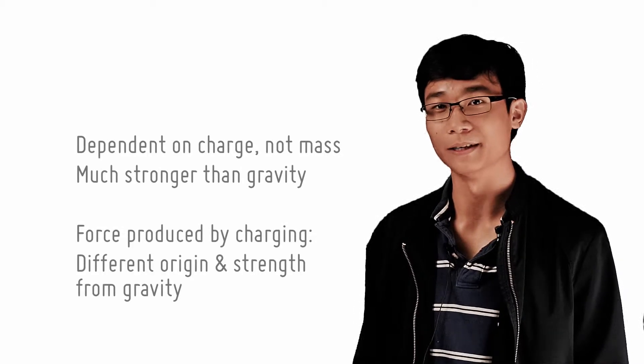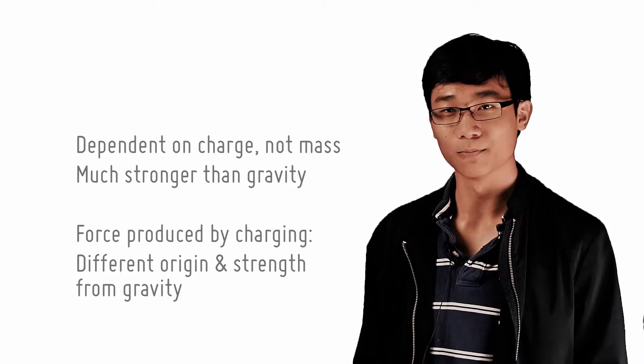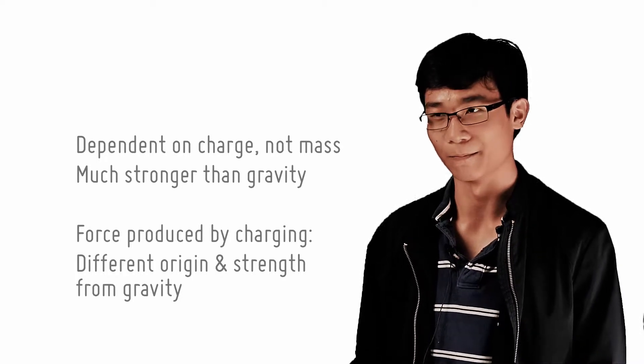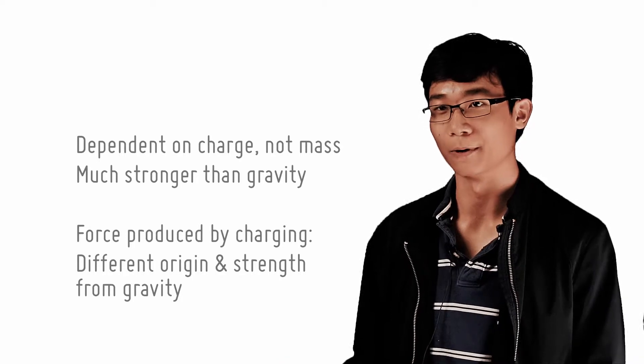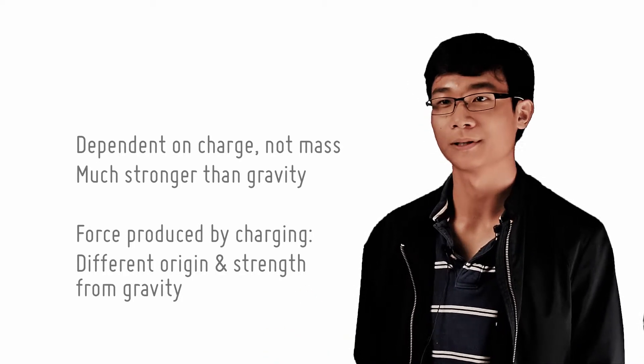Charged objects exert forces on some nearby objects. For example, when you charge a comb by rubbing it, it attracts pieces of paper. The rubbed comb slowly loses charge to the environment, so after a while it cannot exert the same amount of force on pieces of paper. This force is distinct from gravity because the comb doesn't always attract the paper with the same strength — but when you rub it harder, it attracts the paper with more force.